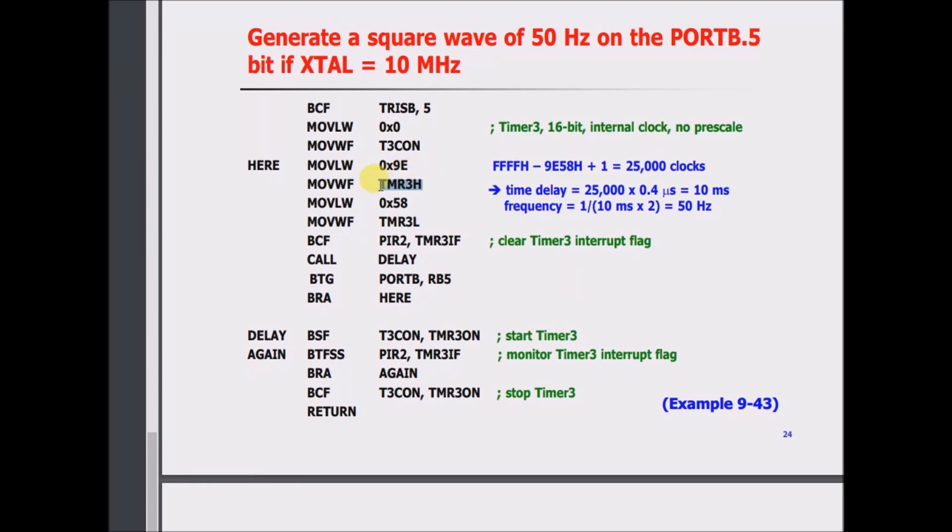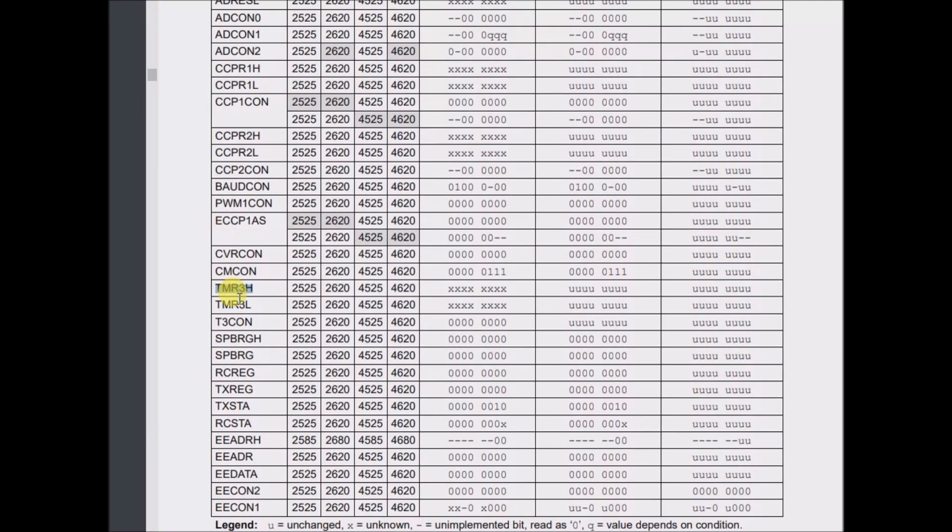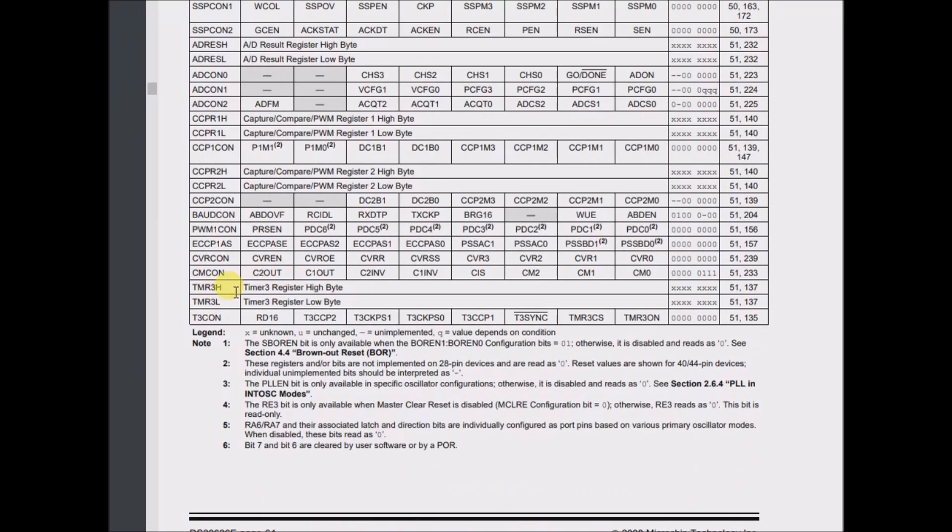So I want to copy this and just see where it shows up, if at all, in my data sheet. I think it will. So yes, it does. Yeah, so these are two timer 3 registers, high byte and low byte, and there are no bits to be set in here. I take it it maybe just accumulates a byte's worth of zeros and ones.